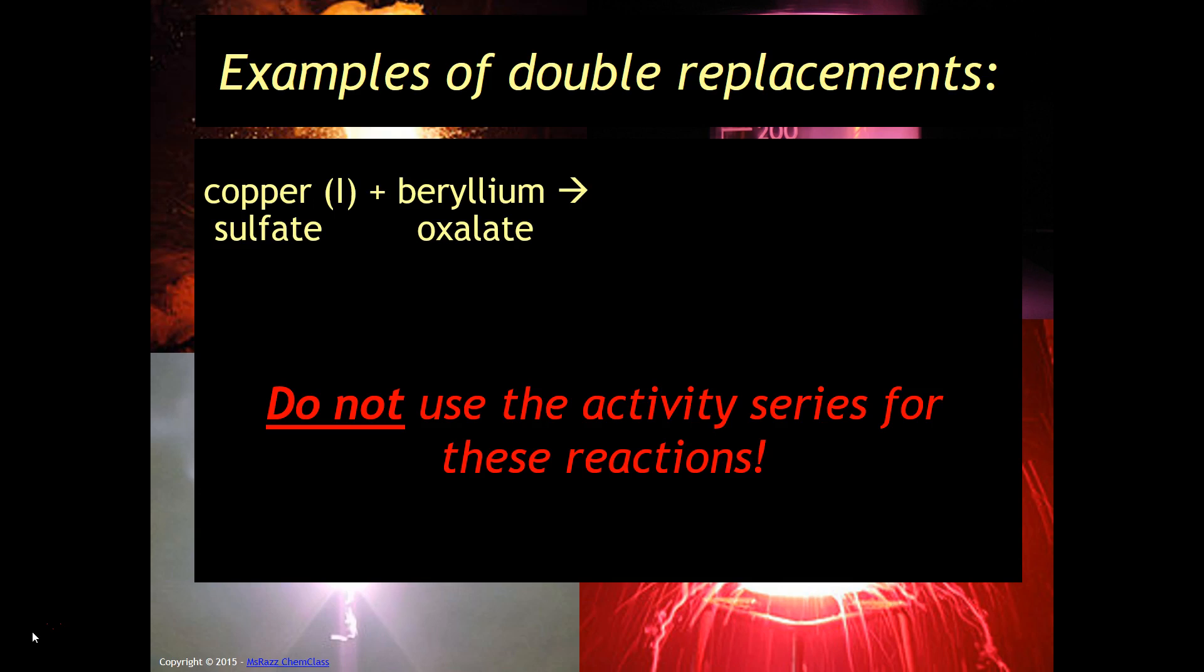It's important that you recognize you are never going to use the reactivity series for anything other than single replacement reactions, and since this is a double replacement reaction you are not going to use it. So in this case you are just going to flip the copper 1 and the beryllium to give you copper 1 oxalate and beryllium sulfate.